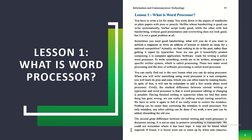Software made for writing is called a Word Processor. To write something, words are to be written and arranged in a specific written system, which is called Word Processing. So combining word and processing, the software that does this processing is called a Word Processor.